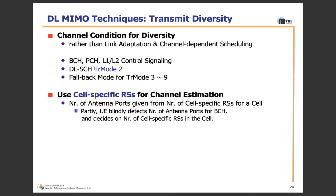The Paging Channel conveys PCCH (Paging Control Channel), used for paging information when searching for a unit on a network. Circuit Switch Fallback (CSFB): when a user device in LTE mode receives an incoming call, the LTE network pages the device, which responds with a special request message, and the network signals the device to move to 2G or 3G to accept the call. Similarly for outgoing calls. All these channels use transmit diversity.